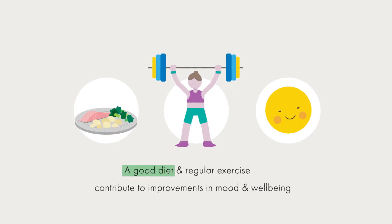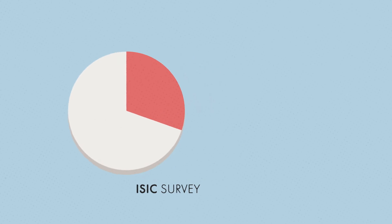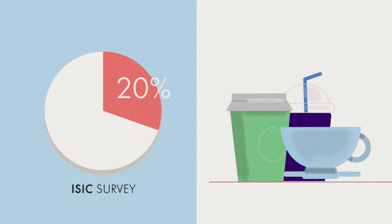Lifestyle measures such as a good diet and regular exercise are known to contribute to improvements in mood and well-being. In ISIC's survey, one in five respondents said a few cups of coffee a day helped improve their moods during the darker months.